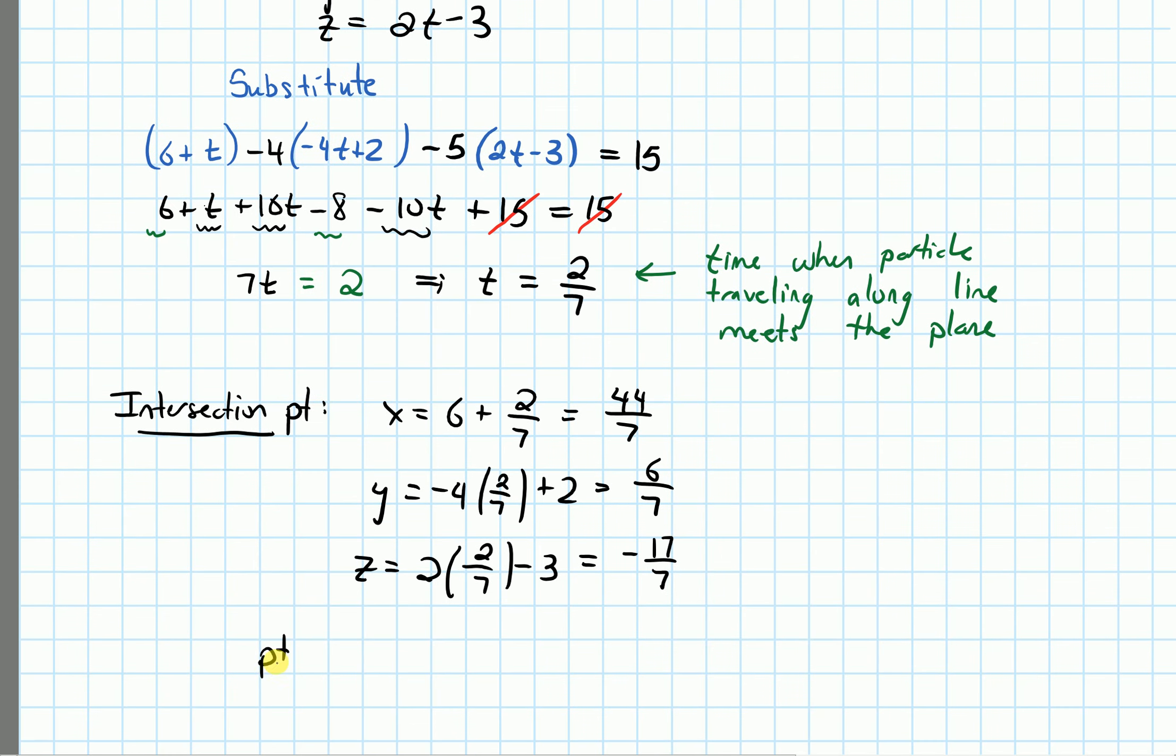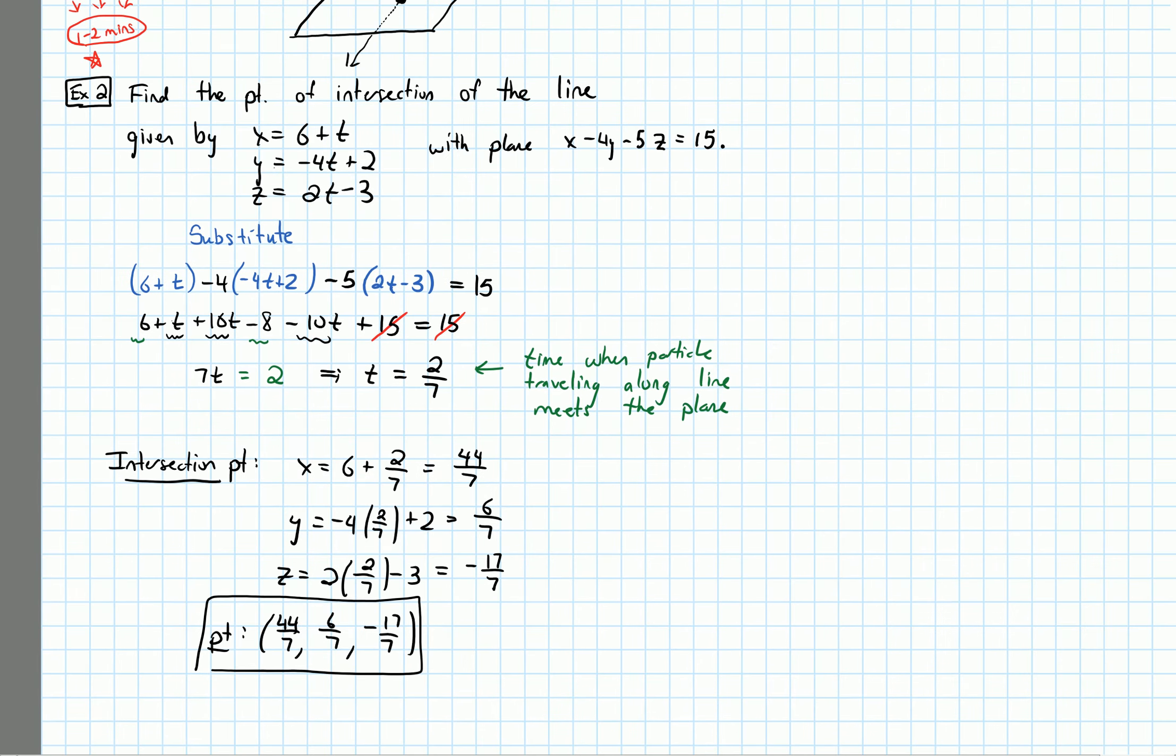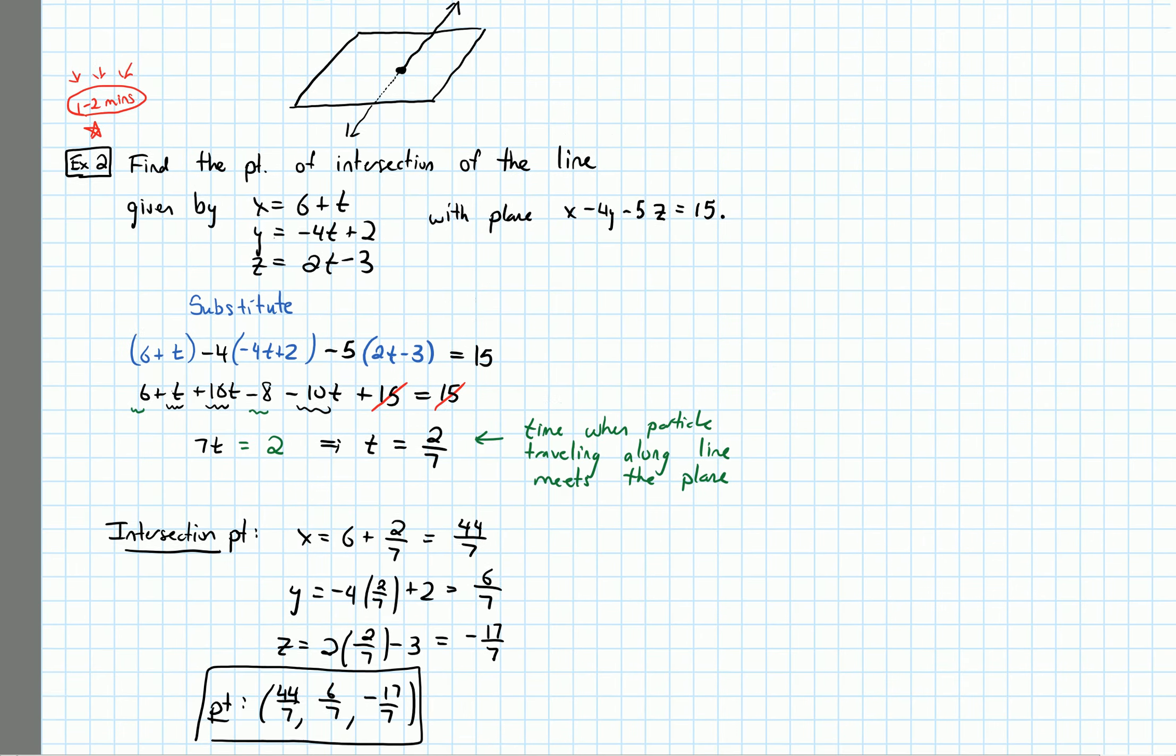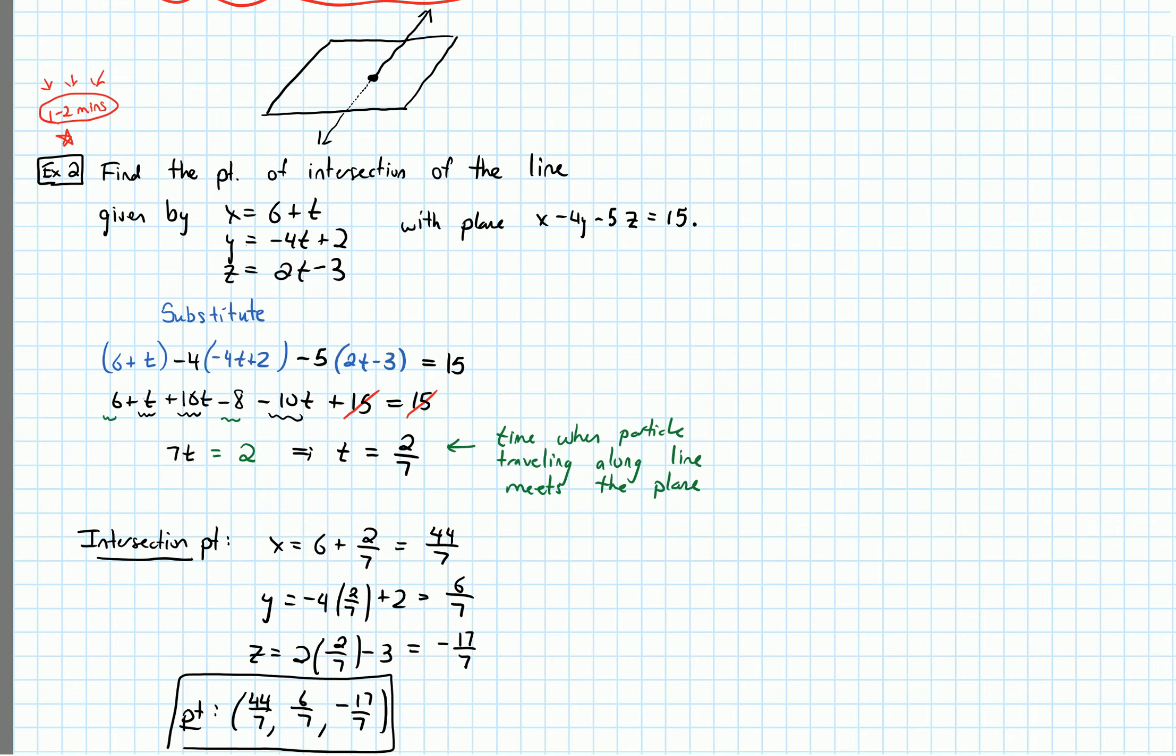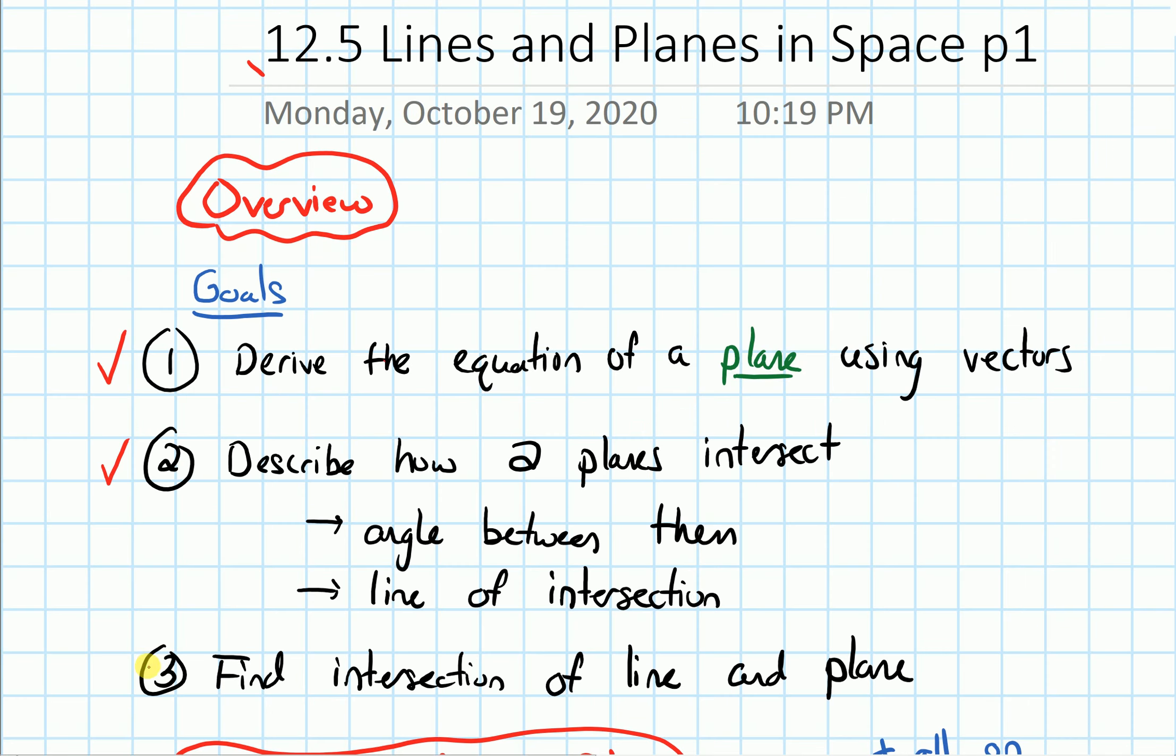We just have to put them as the coordinates of a point. So x is 44/7, y is 6/7, and z is -17/7. And that is the point where this line and this plane intersect. So finally in terms of our goals, we have done our third goal. We've described how to find an intersection of a line and a plane with an example.